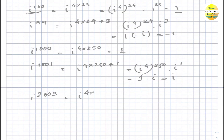i to the power 2003 can be written as i to the power (4×500 plus 3), since 4 times 500 is 2000, and 2000 plus 3 is 2003. It becomes i to the power (4×500) times i to the power 3. That first term is one, and i to the power three is minus i, so the answer is minus i.